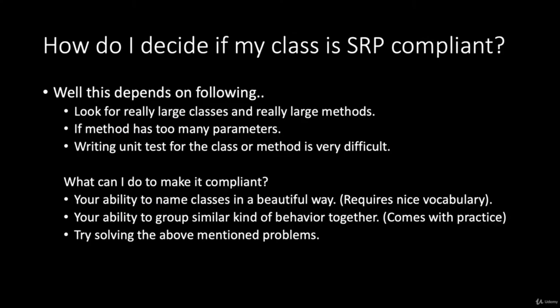We are violating SRP by giving the calculator too many responsibilities. That's why those additional responsibilities were extracted and replaced with delegation of input and operation. Let's look at how to decide if a class is SRP-compliant. If you are looking at classes that are really large — more than 1000 or 600 lines — or very large methods with more than 50 to 60 lines, these are clear indications that they are not following the Single Responsibility Principle.